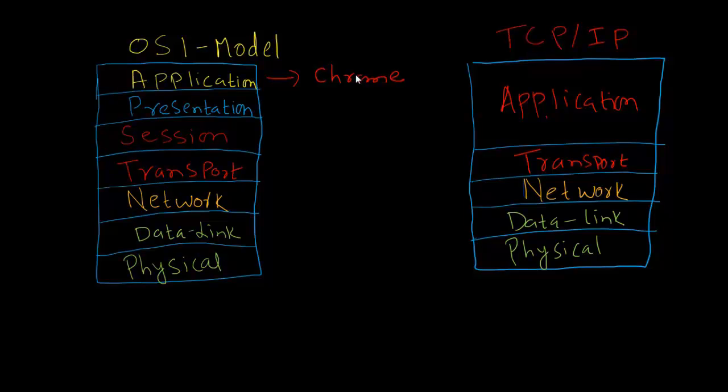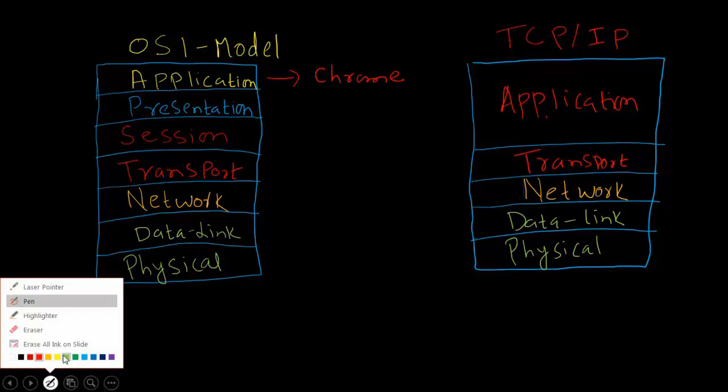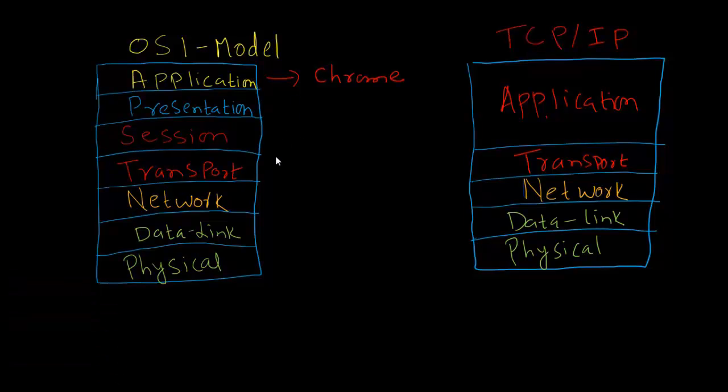Whenever we have data that belongs to different layers, they have different names. It can be a message or just anything. For example, we have segments, we have different names that belong to different layers, then we have datagrams.